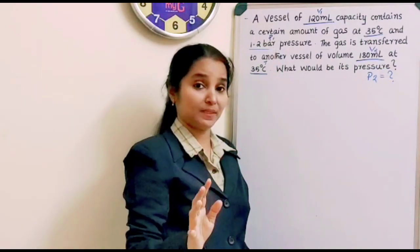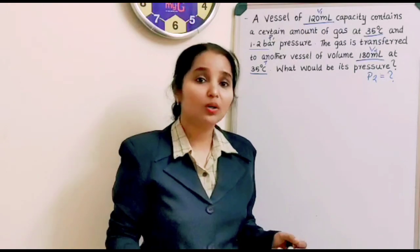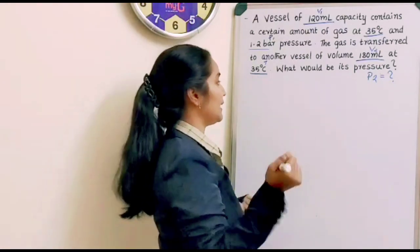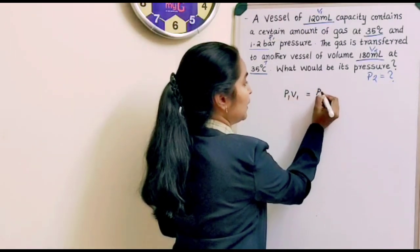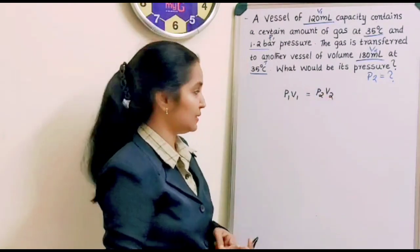And the temperature is kept constant. We have the change in volume given. So the law that should be applied here is Boyle's law. So we will write P1V1 is equal to P2V2 because temperature is kept constant.